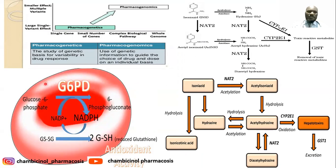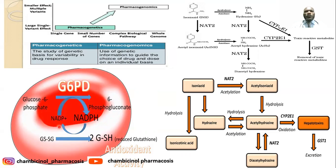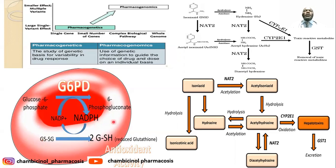The G6PD enzyme is responsible for the conversion of glucose-6-phosphate into 6-phosphogluconate. During this conversion, NADP+ (the oxidized form of nicotinamide adenine dinucleotide phosphate) is converted into NADPH (the reduced form). This NADPH, in red blood cells, is responsible for converting oxidized glutathione into its reduced form, which maintains the integrity and stability of red blood cells.